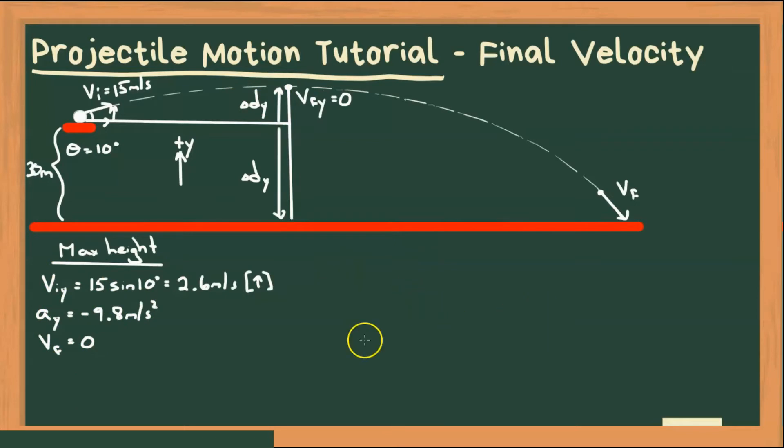Now we have everything except for time, so we're going to use the equation that does not have time involved. And that is vf squared is equal to vi squared plus 2a delta dy. Now vf squared is going to be zero. So rearranging, we get 2a delta dy is equal to negative vi squared, and solving for delta dy, we get negative vi squared divided by 2a.